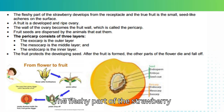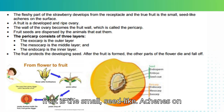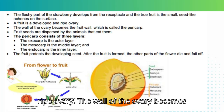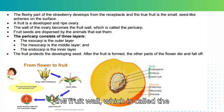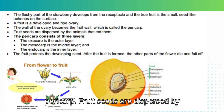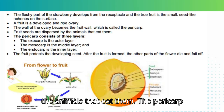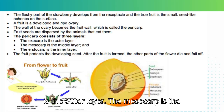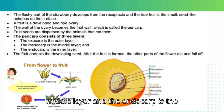The fleshy part of the strawberry develops from the receptacle and the true fruit is the small, seed-like achenes on the surface. A fruit is a developed and ripe ovary. The wall of the ovary becomes the fruit wall, called the pericarp. Fruit seeds are dispersed by the animals that eat them. The pericarp consists of three layers: the exocarp (outer layer), the mesocarp (middle layer), and the endocarp (inner layer).